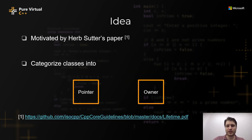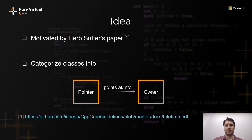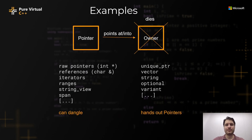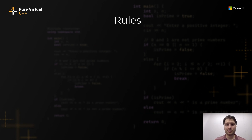The analysis I will talk about is inspired by Herb's lifetime paper. It categorizes classes into two categories: pointers and owners. Pointers might point at or into owners, and when an owner dies, the pointer dangles. Some examples of pointers include raw pointers, references, iterators, ranges, string view, span, etc. Owners include unique pointer, vector, string, optional, variant, and so on. These owners can hand out pointers — for example, calling the data method on vector will create a pointer that points into that vector.